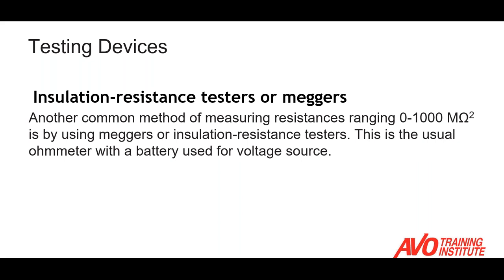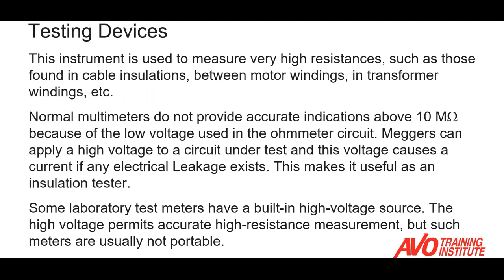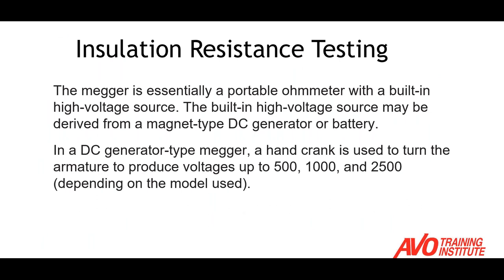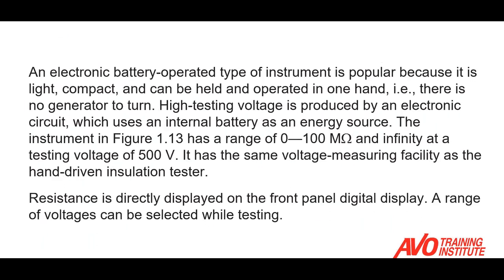Insulation resistance testers — commonly called meggers — perform what's called a meg test or megger test. The whole purpose of this test is to verify the integrity of the insulation before putting the device in service. Most multimeters do not provide an accurate indication above 10 mega ohms, so the megger is essentially a portable ohmmeter with a built-in high voltage source. Most DC meggers produce a voltage of 500, 1,000, or 2,500 volts depending on the model. There's a battery in the instrument generating the test voltage, and the resistance is displayed directly on the panel — either on an analog or digital display.